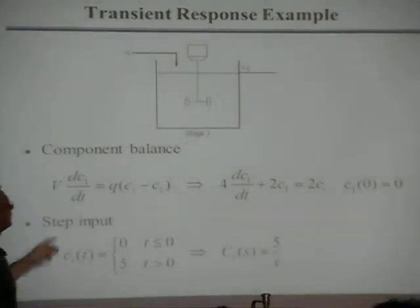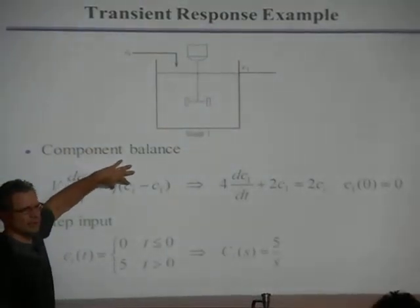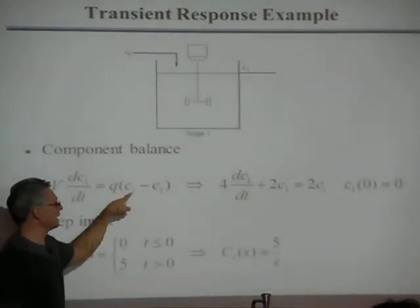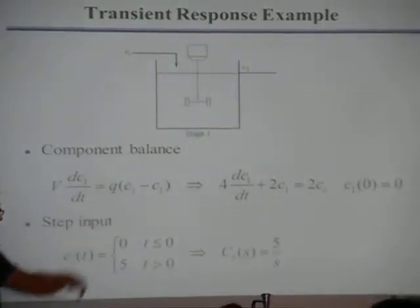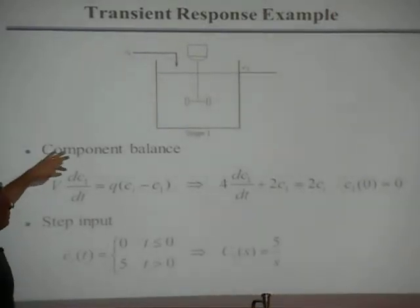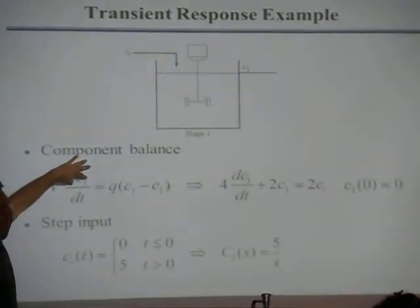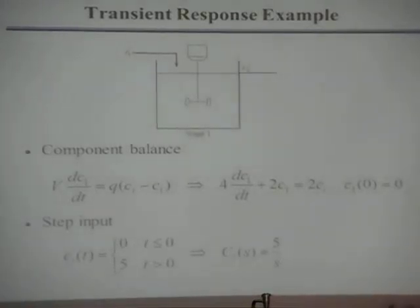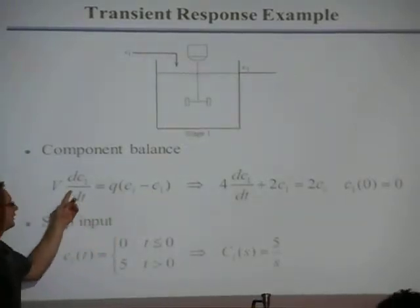The component balance looks like this. This would be volumetric flow times mass concentration, so these two things multiplied together is mass per unit time of whatever component is entering. The second term is mass per unit time of it exiting. So in minus out, no generation because there's no reaction taking place. And this is the accumulation term.